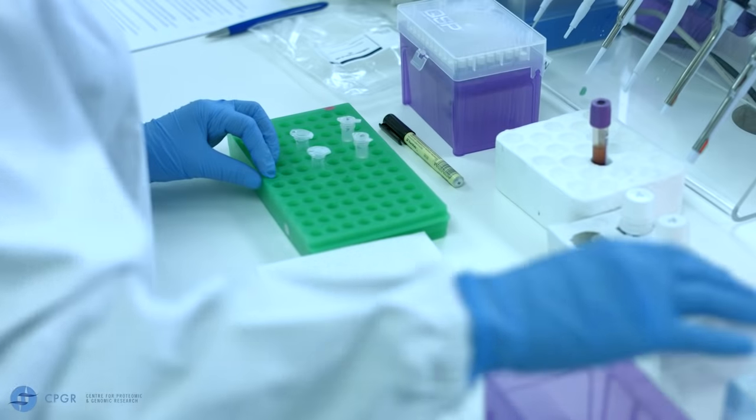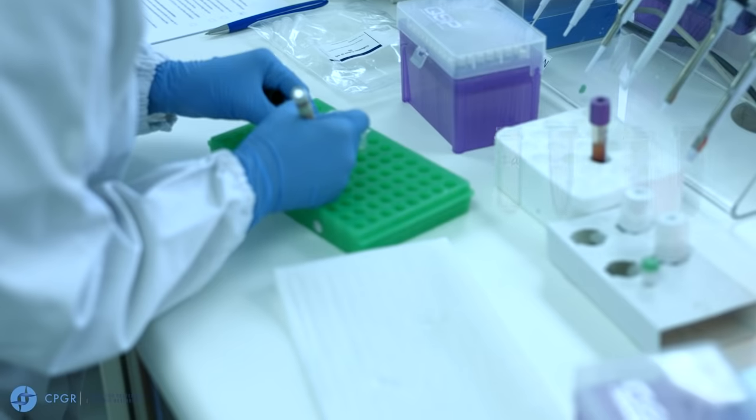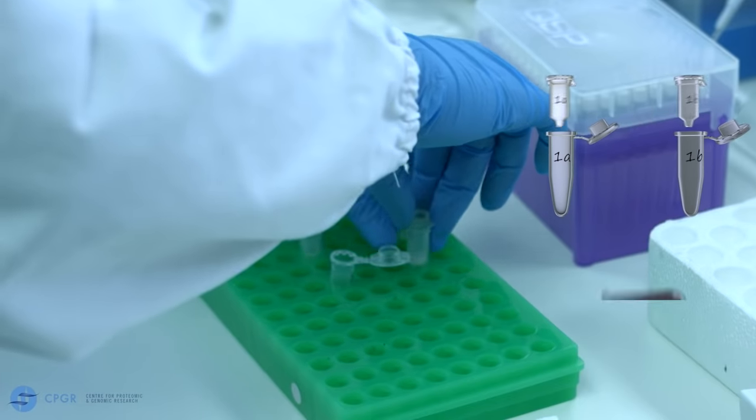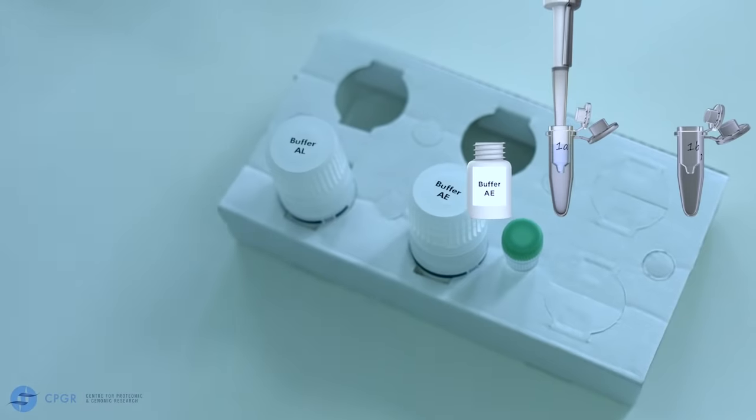Label clean 1.5 mil microtubes, one for each sample, and transfer the spin columns to each corresponding microtube. The DNA that was on the spin column will be eluted from the column to the AE buffer.